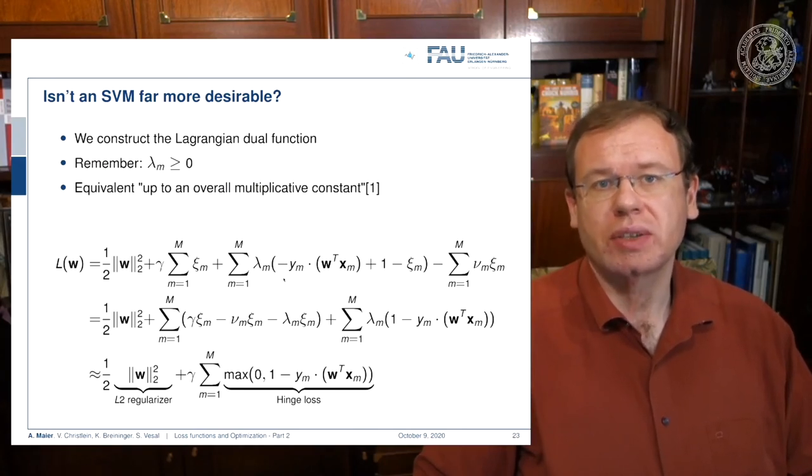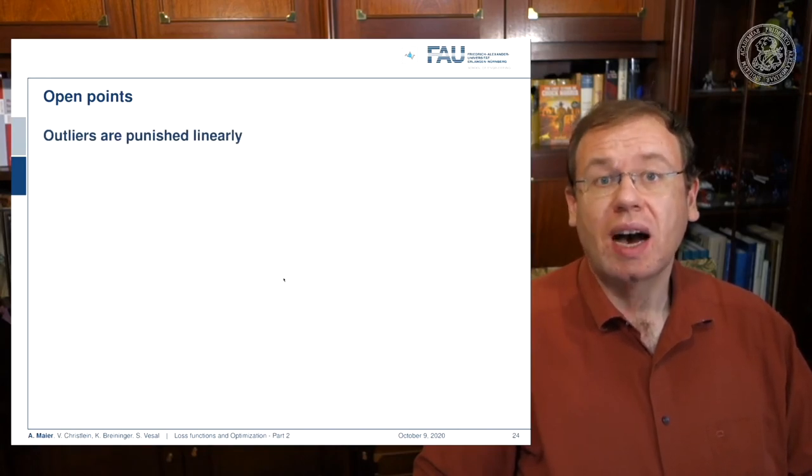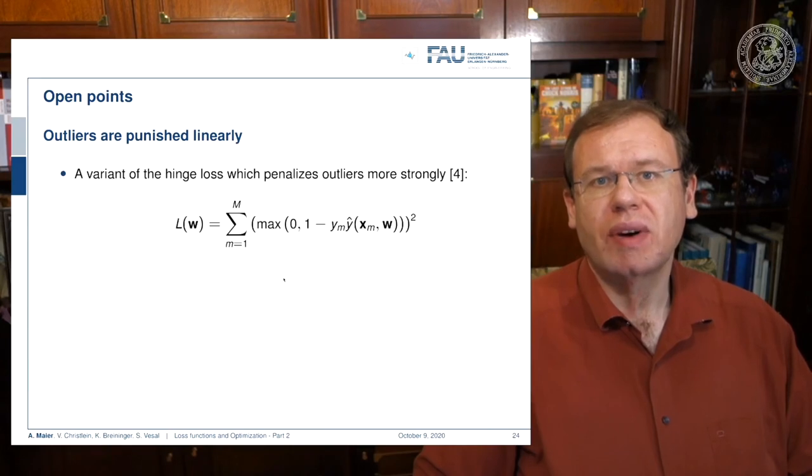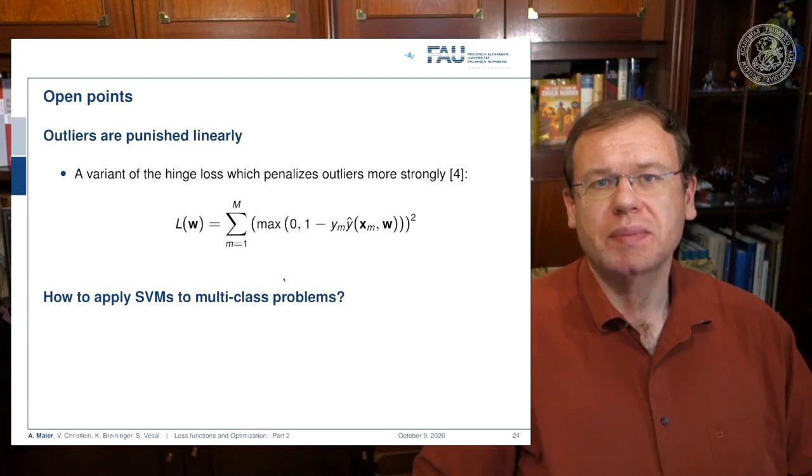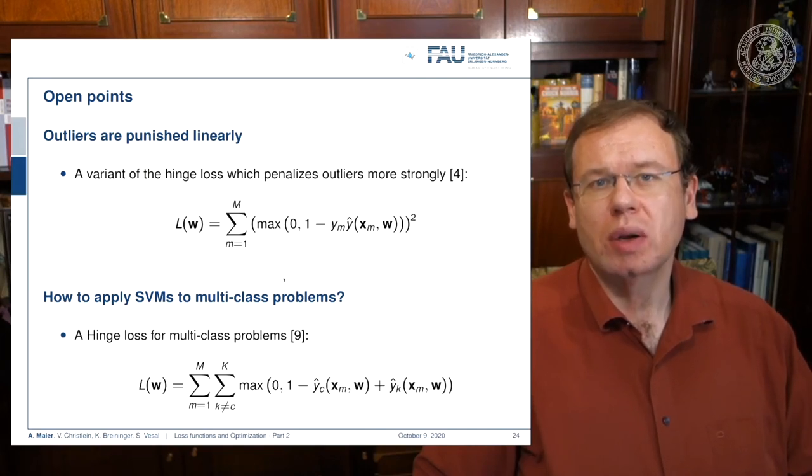Okay, some open points: outliers are punished linearly. There's a variant of hinge loss which penalizes the outliers more strongly. You can do that, for example, by introducing squares. So this is a very common choice. So we can also apply this hinge loss to multi-class problems, and what we are introducing here is simply an additional sum where we then do one versus many. So we are not just classifying towards one class, but we are classifying one versus the rest. This introduces the new classifiers shown here in the very end. This leads to a multi-class hinge loss.